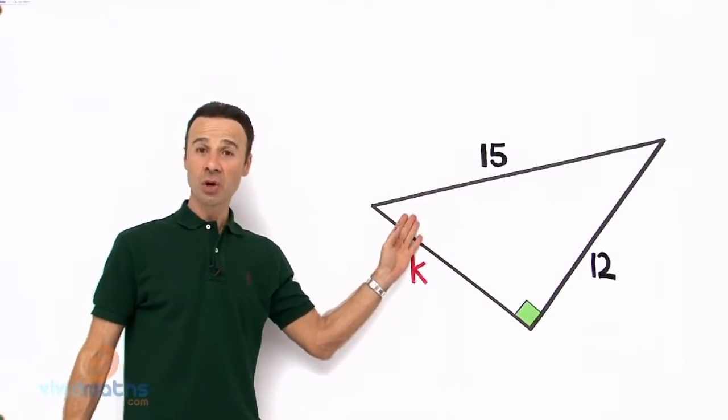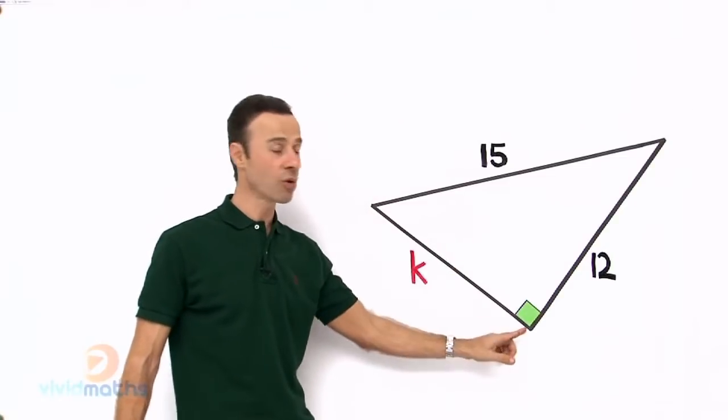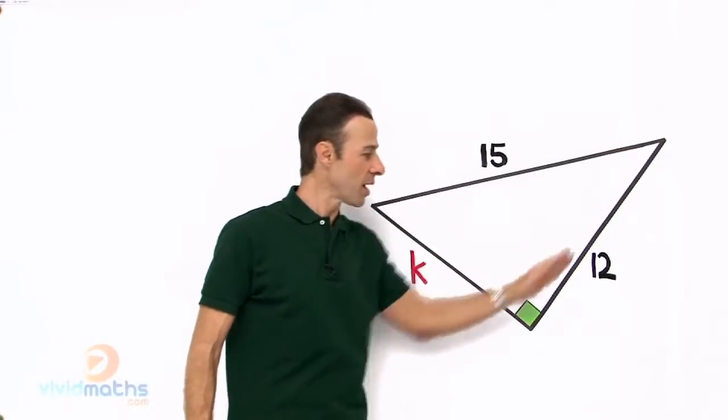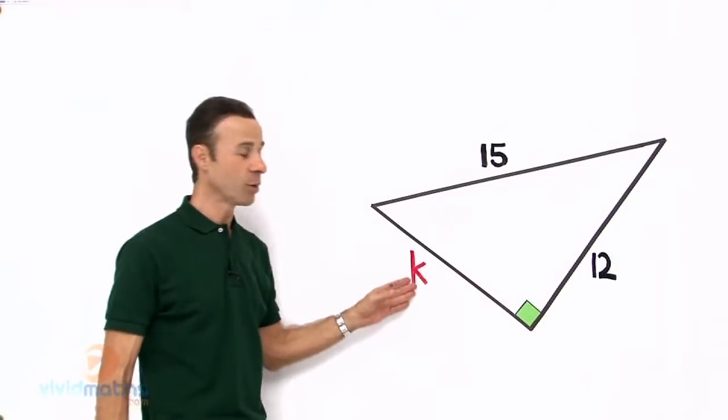For those who don't remember, it's called the hypotenuse - the long length not attached to the right angle. Then we have two other lengths that are attached to the right angle: here we have 12 and here we have K.